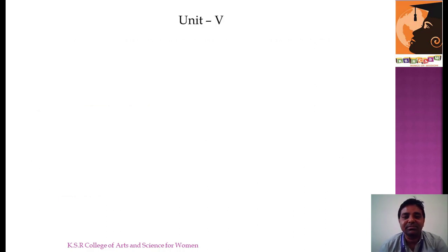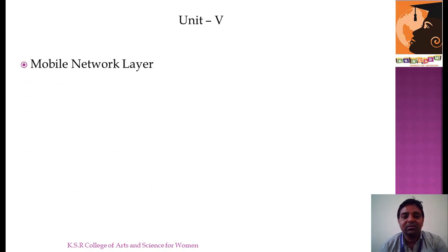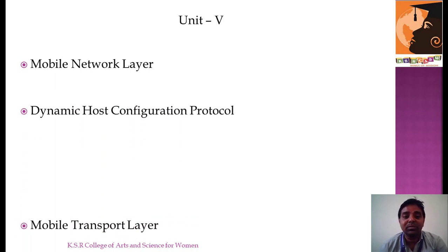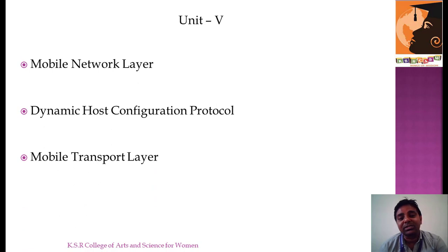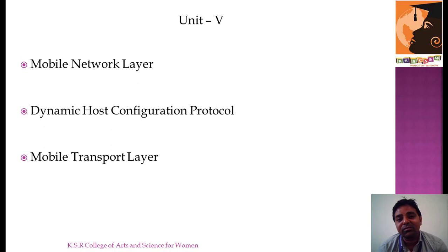In Unit 5, which we are discussing today, we will be talking about three areas: one is mobile network layer, second is dynamic host configuration protocol, and the third is mobile transport layer. Network layer falls in the third layer and transport layer falls in the fourth layer of the OSI model. The network layer is responsible for routing, and the transport layer is responsible for going through all the subnets and choosing the right networks.